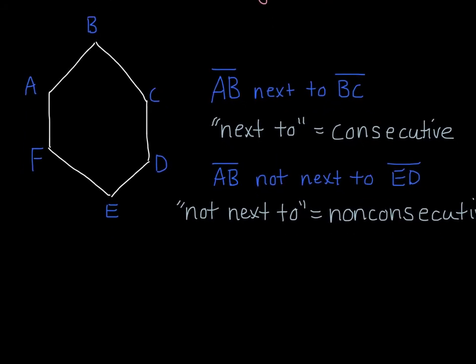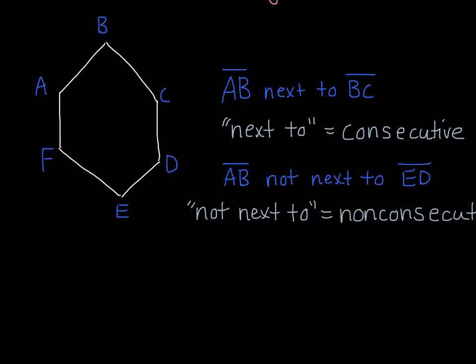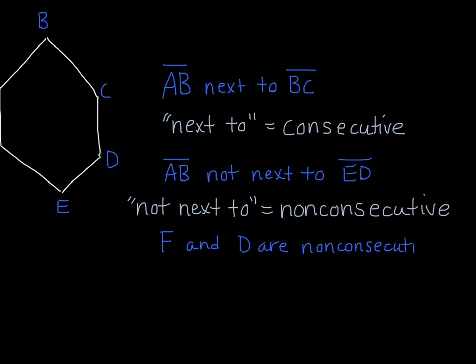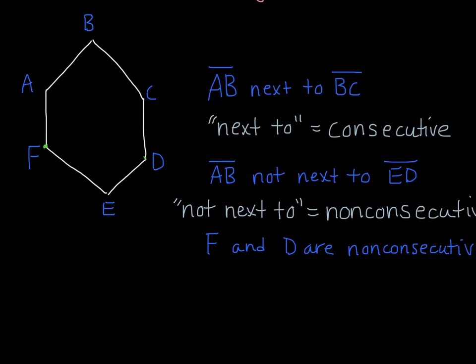And that idea brings us to our last definition, which is, what happens if you draw a line between things that are not consecutive? So let's say F and D are not consecutive. Vertex F and D are non-consecutive. So F and D are non-consecutive, and if I connect them with a line, which should be straight, this line here is called a diagonal. And so a diagonal is contrasted to a side. ED would not be a diagonal because that's one of the sides of the polygon. But FD is a line drawn between non-consecutive vertices. It goes through the polygon, and so that is called a diagonal. It's not a side. It would be diagonally through the polygon.